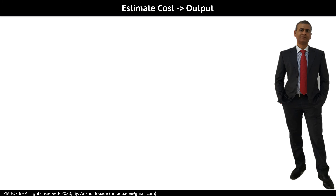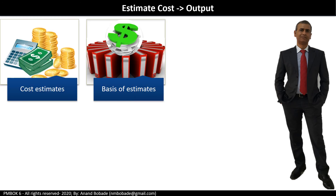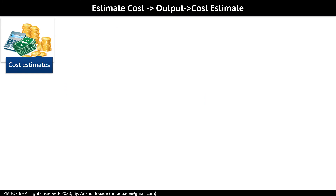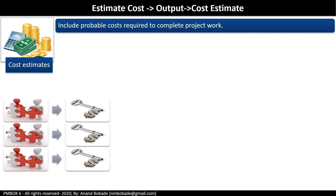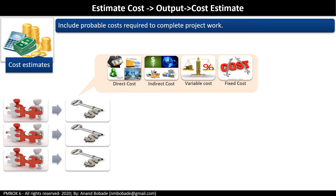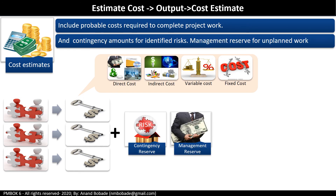The outputs of the estimate cost process are cost estimates, basis of estimates, and project document updates. The key output is the cost estimate — a probable cost required to complete project work — which can be presented in summary or detail form. It includes direct costs (labor, material, equipment, services, facilities), indirect costs, variable costs (inflation, allowance, exchange rate), fixed costs (one-time setup costs), special categories like financing interest charges, as well as contingency reserve for identified risks and management reserve for unknown unknown risks.